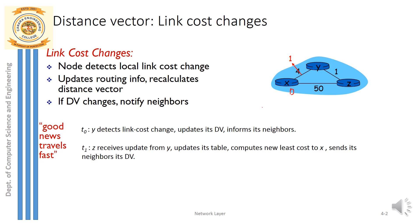At time t=1, node z is the neighbor of node y. Whatever the distance vector is calculated at t=0, that is circulated to the neighboring node z. Node z receives the updates from y at t=1. In distance vector, at every iteration a node receives information about its neighbors from the previous iteration, and that updation is circulated in the next iteration.